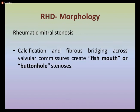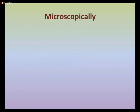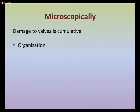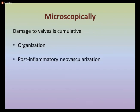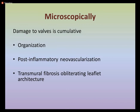The mitral stenosis shows calcification and fibrous bridging across the valvular commissures, creating a fish-mouth or buttonhole stenosis. Microscopically, cumulative changes occur in the form of organization — where regeneration is not possible, necrotic cells are replaced by collagen. There is also post-inflammatory new vascularization and transmural fibrosis that further obliterates the leaflet architecture.